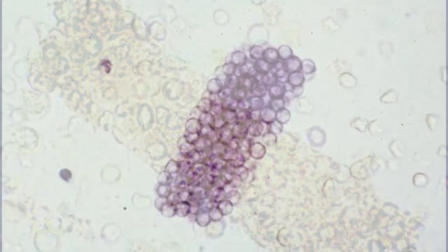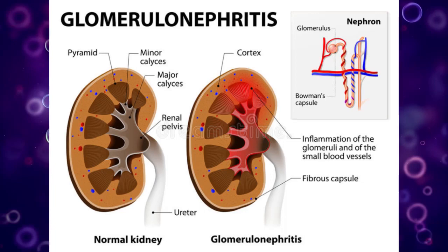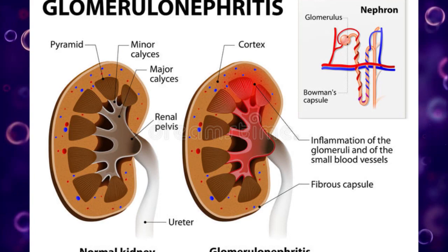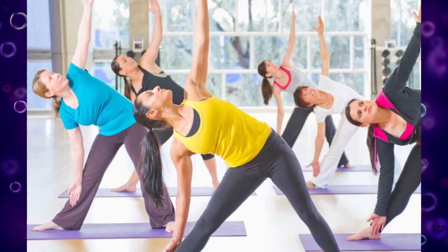Red blood cells may stick together and form red blood cell casts. Such casts are indicative of glomerulonephritis with leakage of RBCs from glomeruli or severe tubular damage. RBC casts have been described along with hematuria in healthy individuals after exercise.